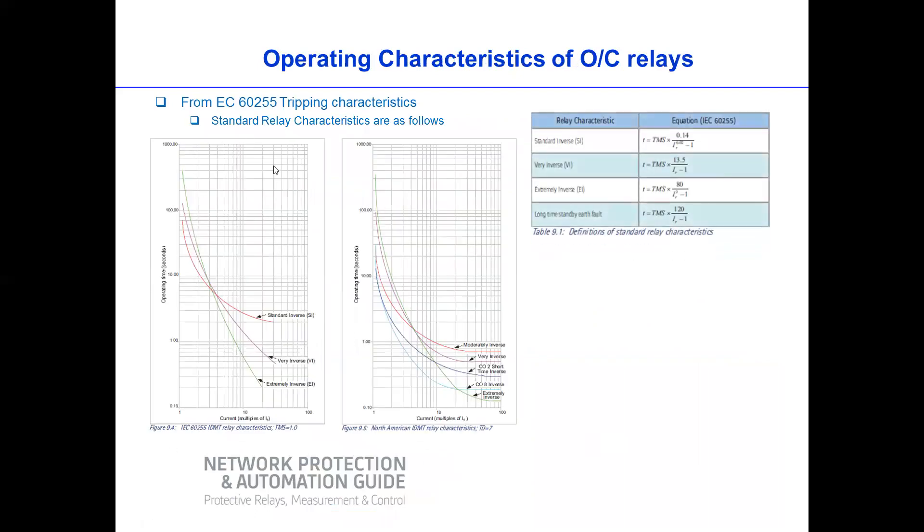So now if we look at the standard IEC 60255 tripping characteristics, which is taken from the network protection and automation guide relay, which is a document that's available on the internet. So everyone can have access to that document. So this is basically various IDMT curves: standard curve, inverse curve, extreme curve. And then this is current magnitude or multiples of the fault current.